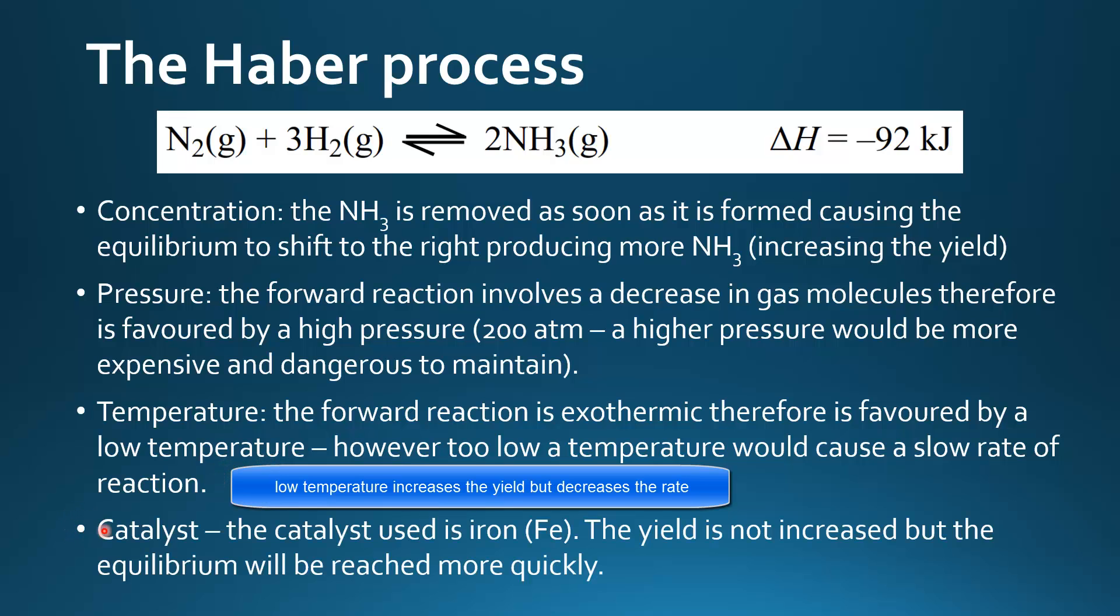And finally the catalyst. The catalyst uses iron Fe. The yield is not increased but the equilibrium will be reached more quickly.